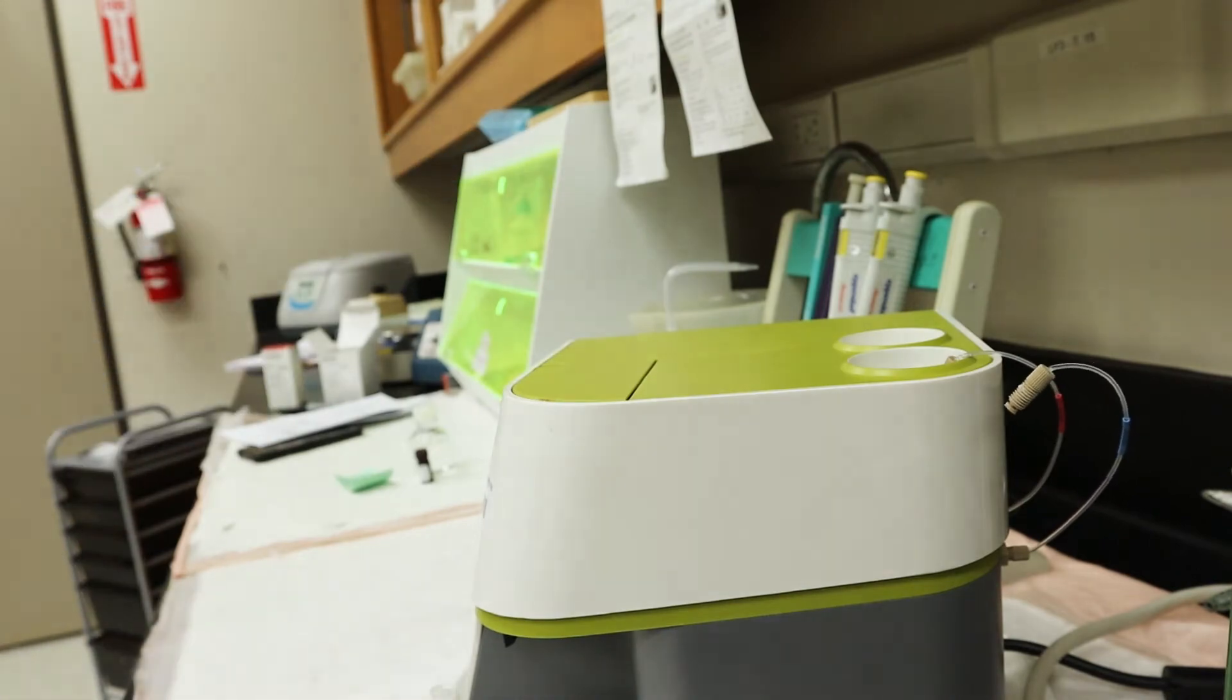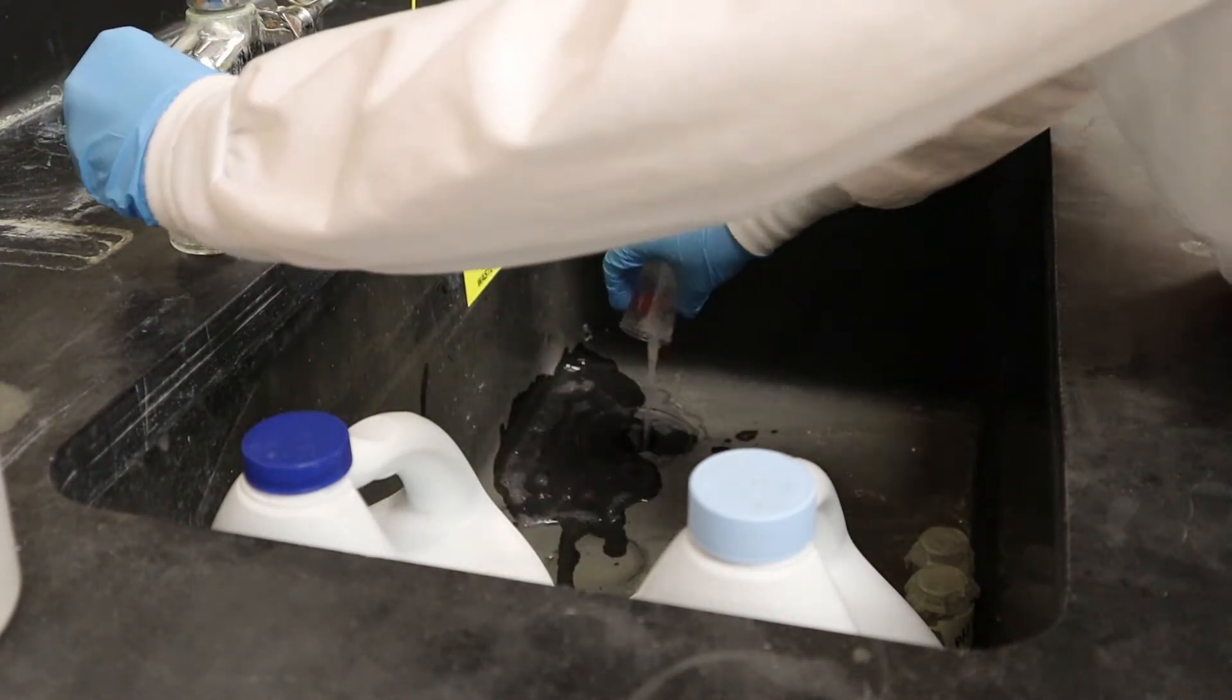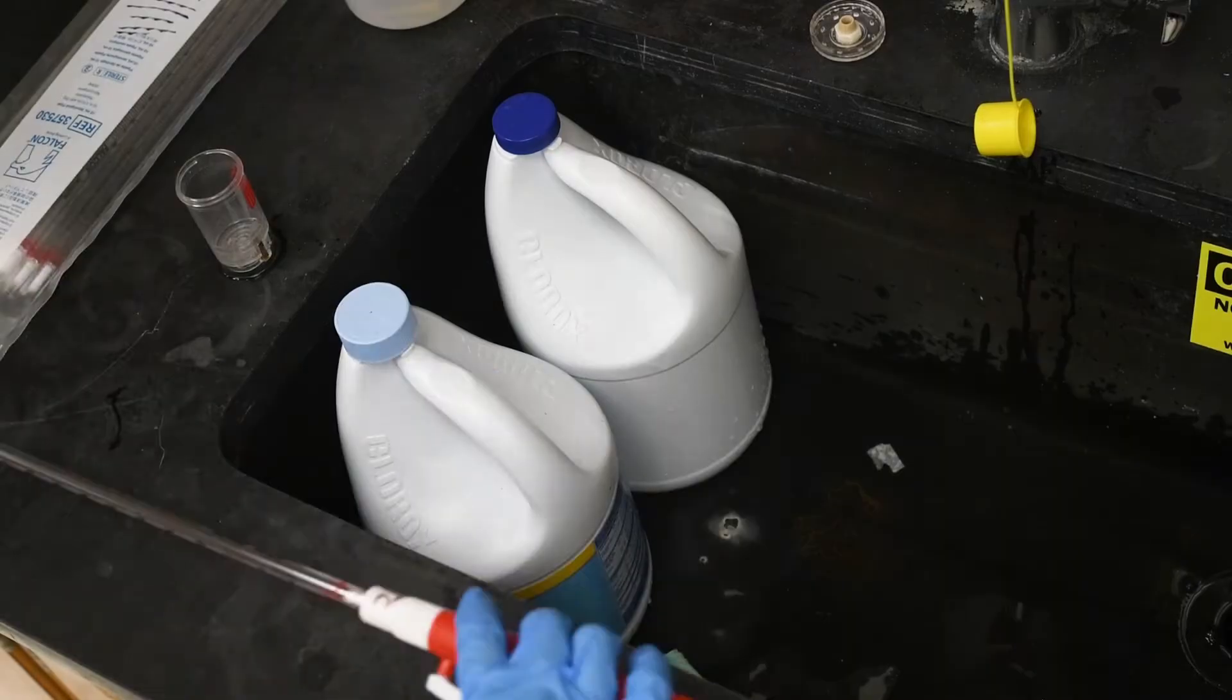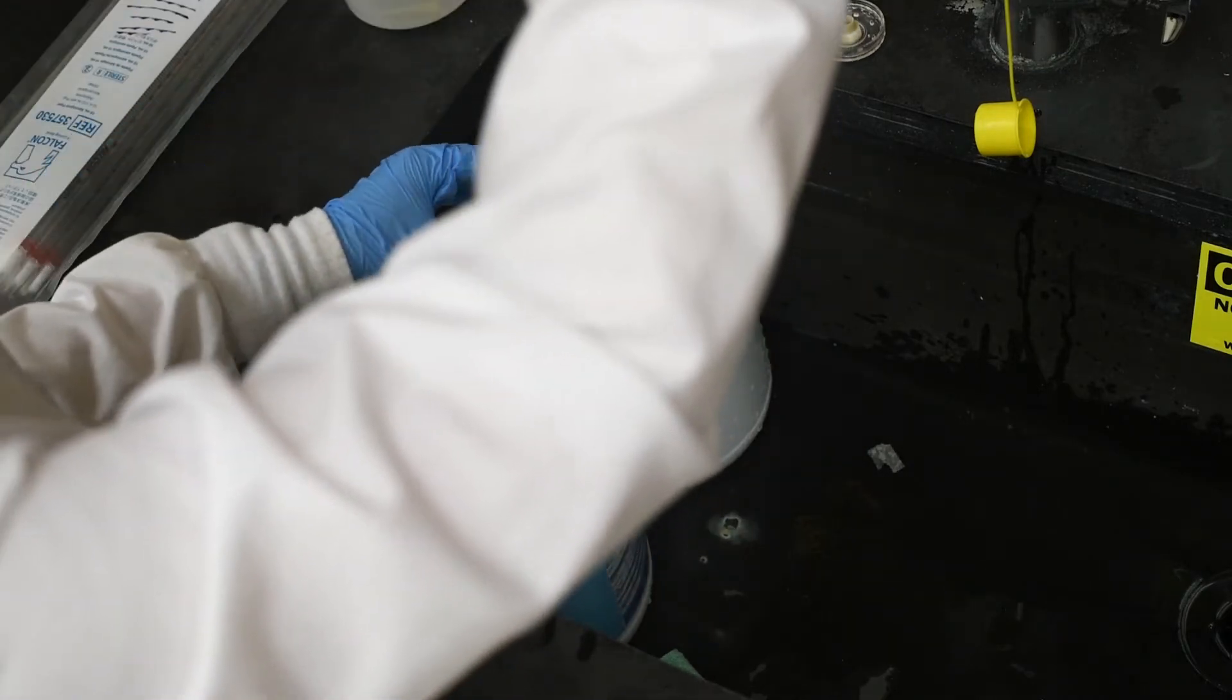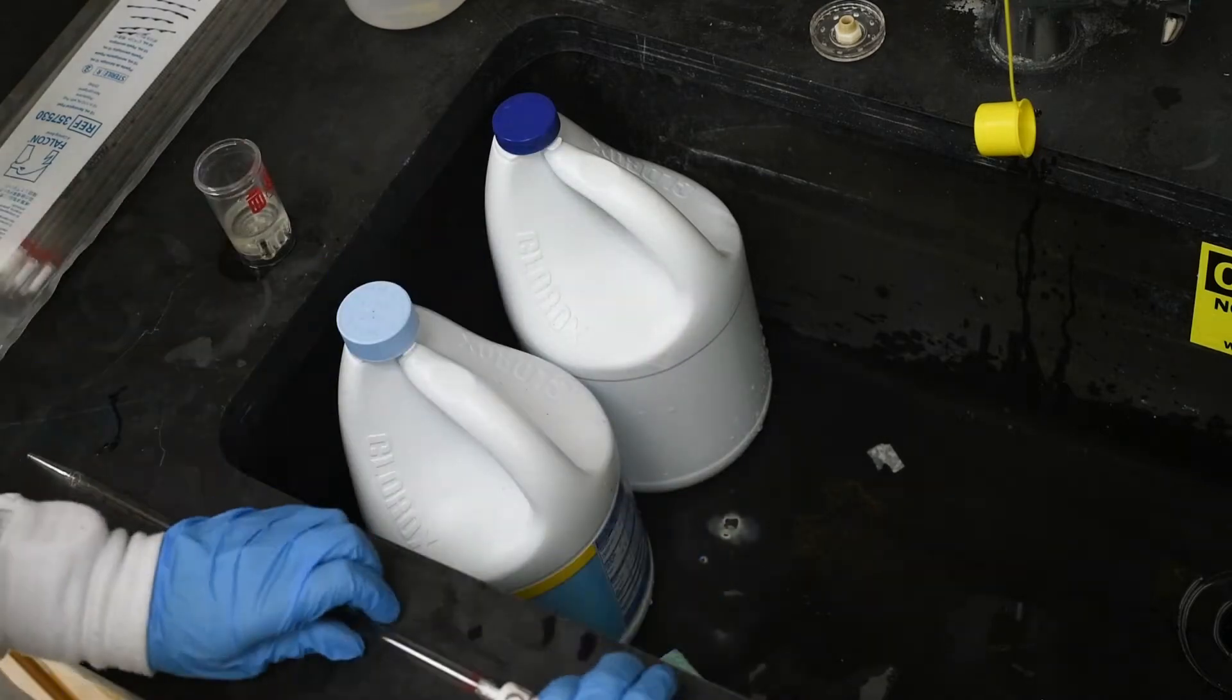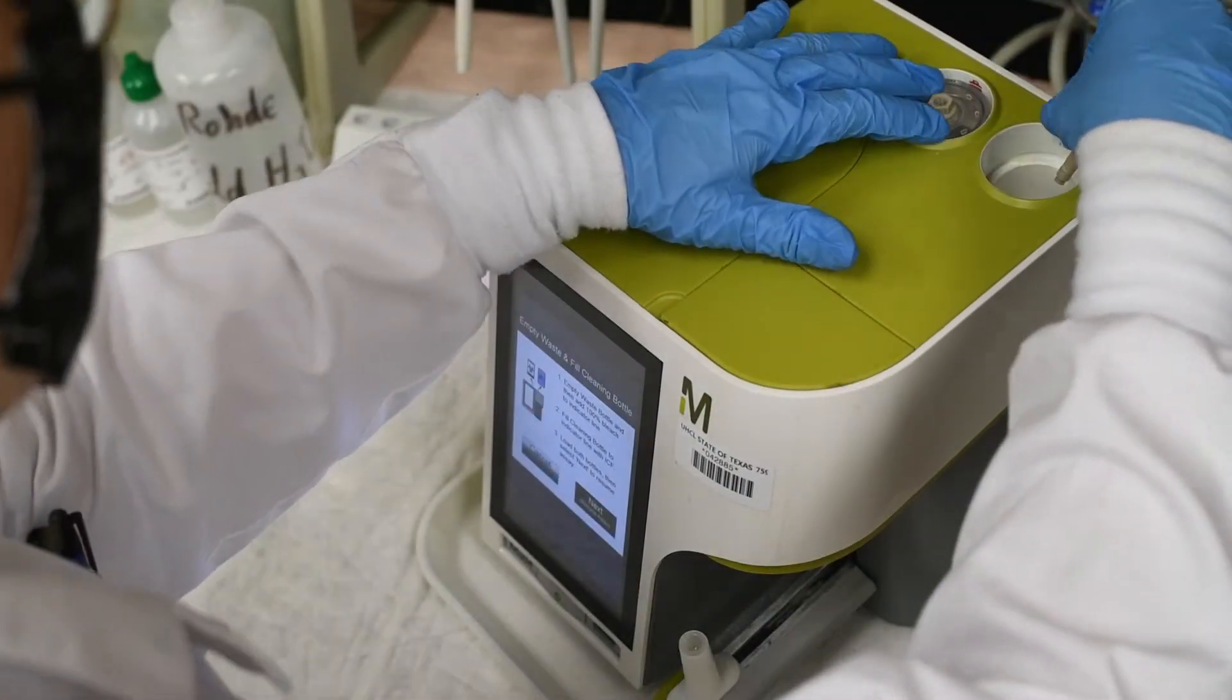The waste bottle contains a 20% bleach solution that decontaminates biowaste and can be emptied into the sink once uncapped. Once emptied, rinse with water and refill with 10 milliliters of 20% bleach.